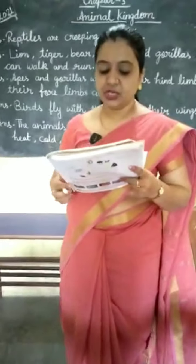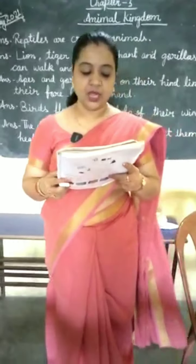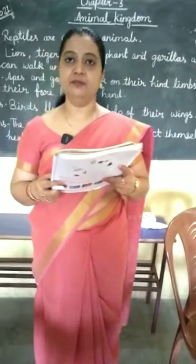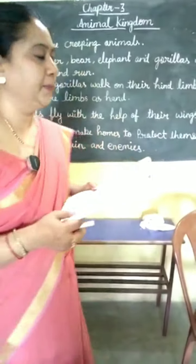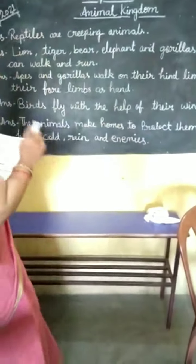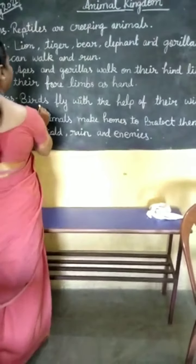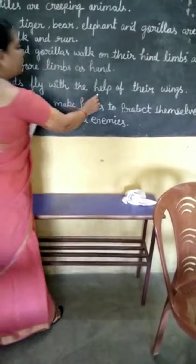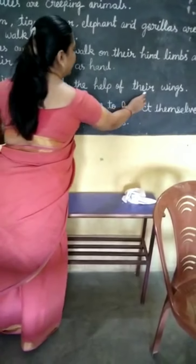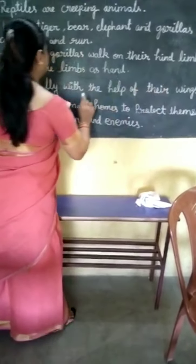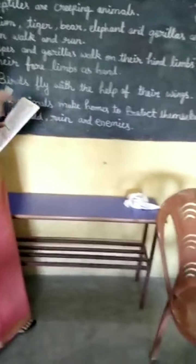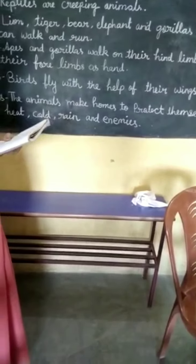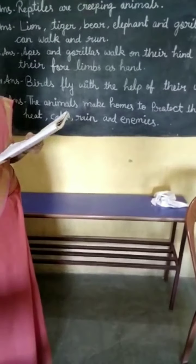Next question, question number four: How do birds fly? Birds fly with the help of their wings. Birds use their wings — their pankh — to fly.